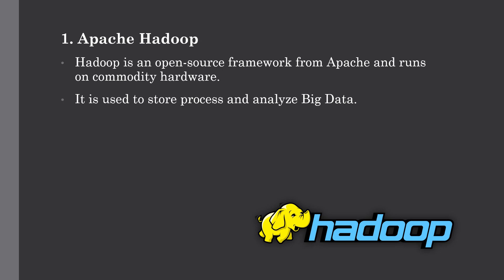Hadoop uses cluster technology, which is a group of systems connected via LAN. It has three parts: first is HDFS, known as the Hadoop Distributed File System, which is used for storing the data. Another is MapReduce, which is used for data processing. And YARN, which is used for resource management. We will see all about Hadoop in a separate tutorial dedicated to Apache Hadoop.